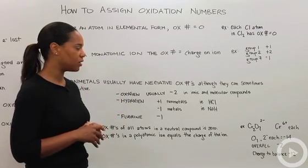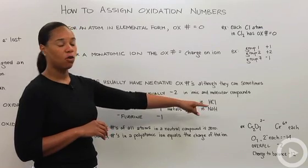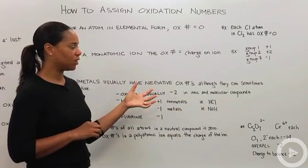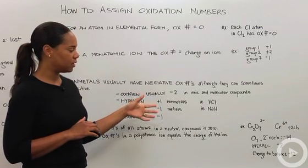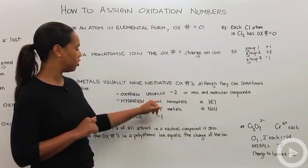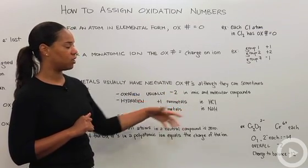Cr2O7, chromium and oxygen with a two minus charge. Okay, so we want to know what the charge on the chromium is. We know that the oxygens are going to have a two minus each. Oxygen is two minus, so that means we have the oxygen contributing a charge of negative 14.